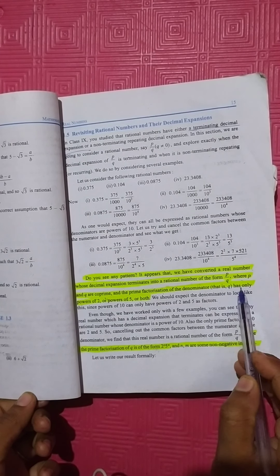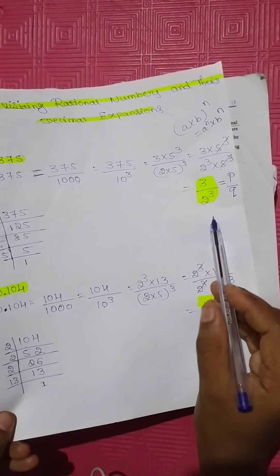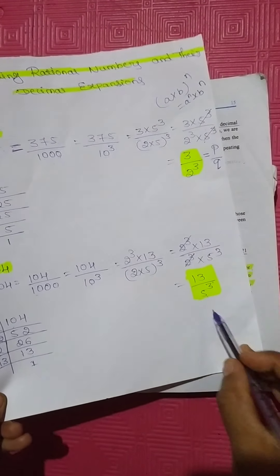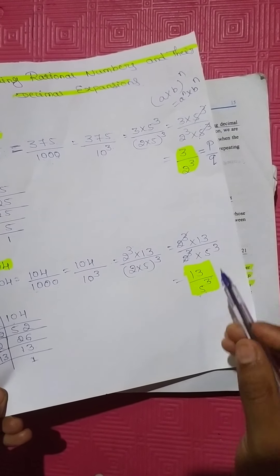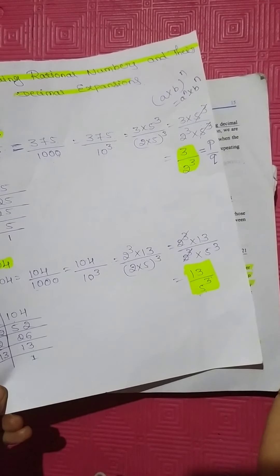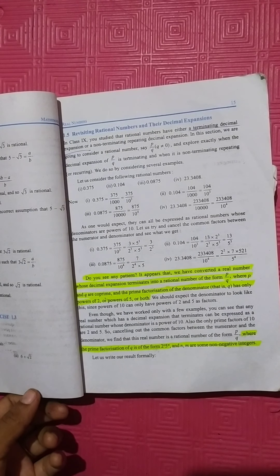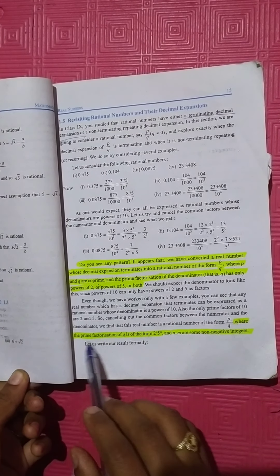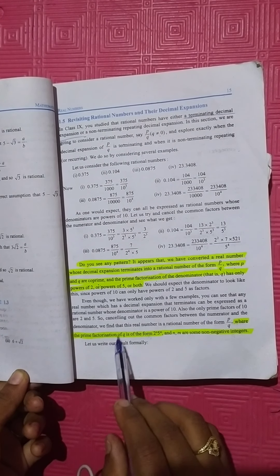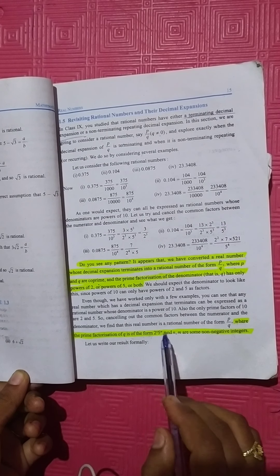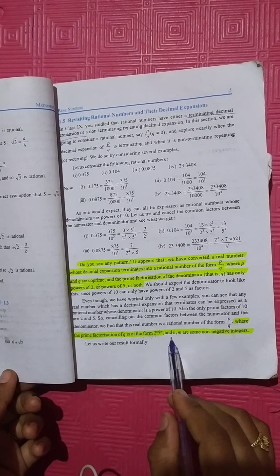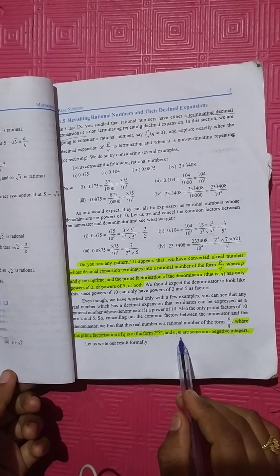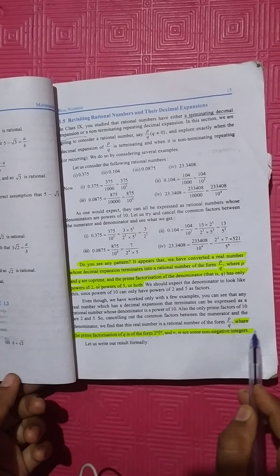Looking at the denominator: in the first example only 2 to the power of 3 is there, and in the second only 5 to the power of 3. The other denominator contains both. The condition is: the prime factorization of Q is of the form 2 to the power of N into 5 to the power of M, where N and M are some non-negative integers.